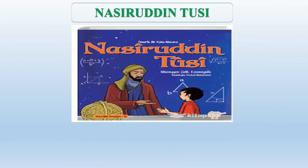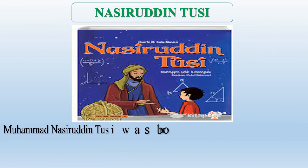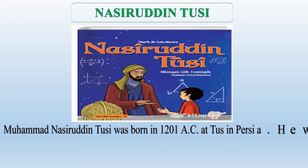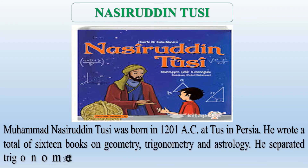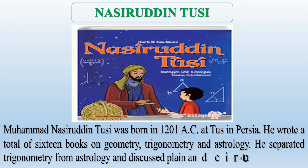Now the contribution of Nasiruddin Tushi. Muhammad Nasiruddin Tushi was born in 1201 AC at Tush in Persia. He wrote a total of 16 books on geometry, trigonometry, and astrology. He separated trigonometry from astrology and discussed plane and circular trigonometry.